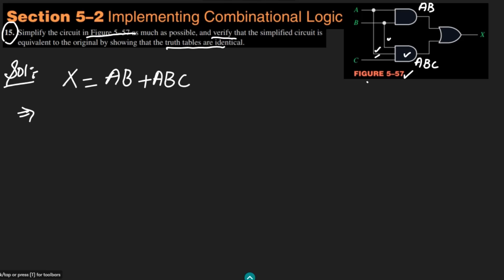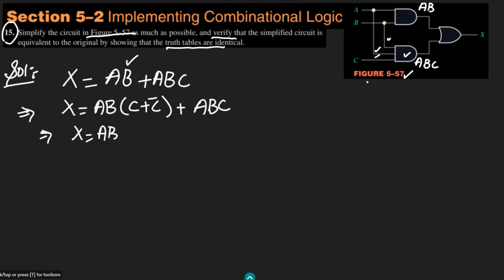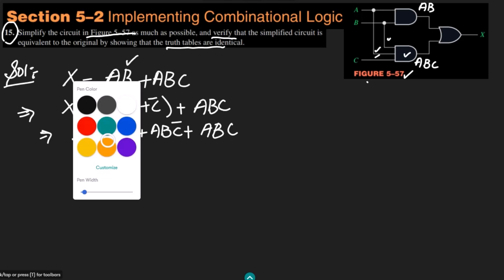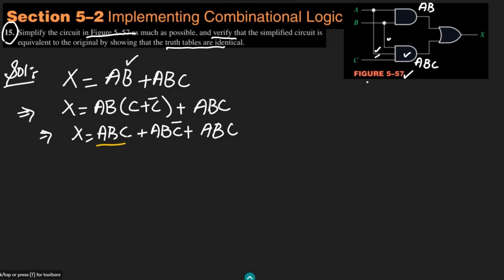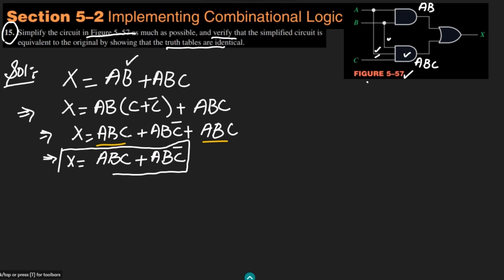We can convert this to standard form by multiplying the AB term by (C + C'). So X = AB(C + C') + ABC, which expands to X = ABC + ABC' + ABC. We can see that the ABC term appears twice, and by the idempotent rule ABC + ABC = ABC. Therefore X = ABC + ABC'.